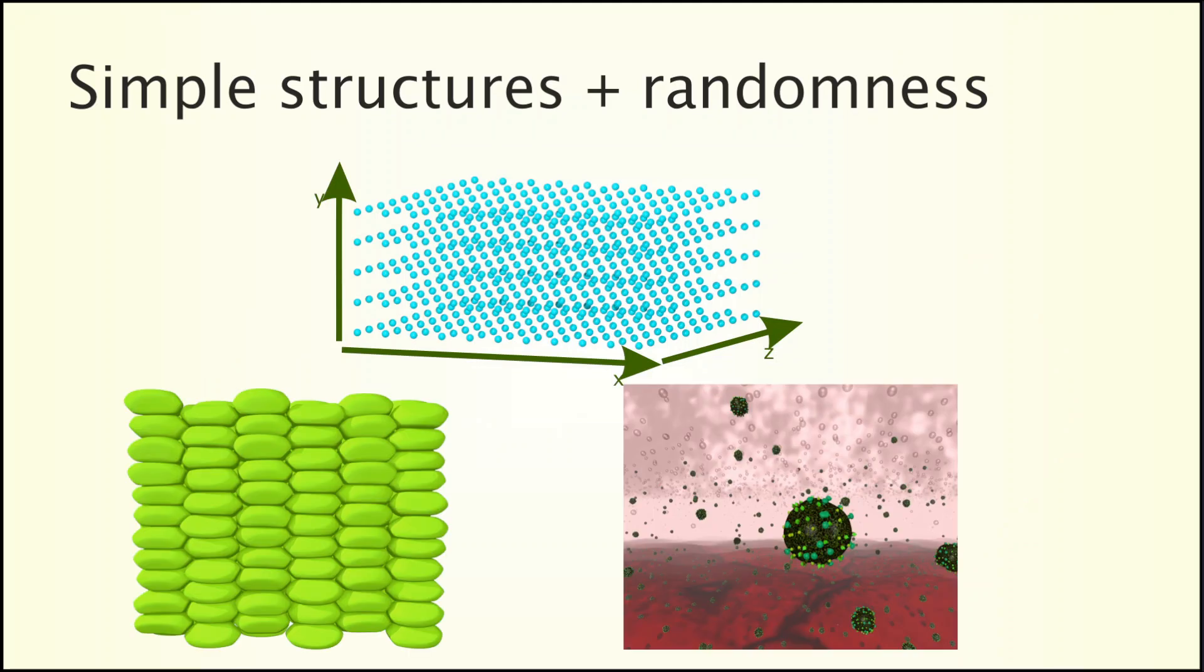To the left there is a relatively regular tissue of plant cells with a low amount of randomness. The arrangement of bacteriophage viruses to the right has been done with a high degree of randomness.